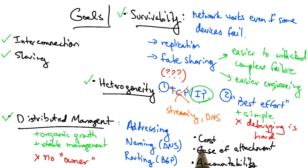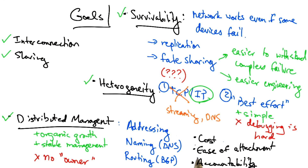The other three design goals that Clark discusses are cost effectiveness, ease of attachment, and accountability. It's reasonable to argue that the network design is fairly cost effective as is, and current trends are aiming to exploit redundancy even more. For example, we will learn about content distributions and distributed web caches that aim to achieve better cost effectiveness for distributing content to users.